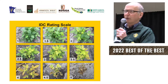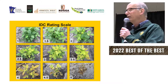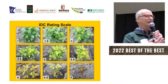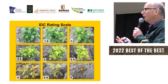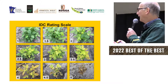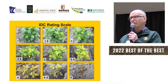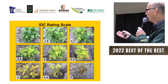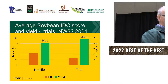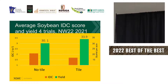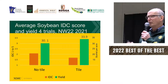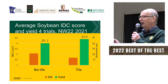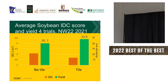When I was planting it was dry, the crop came up nice and green, we got some rain, and all of a sudden we had some iron deficiency chlorosis show up. The scale we use at NDSU is from one to five — one is green, five is dead. On this slide the scale is on the left for IDC, and the brown bar is IDC while the green bar is yield. On the left you see no-tile and on the right you see tile.